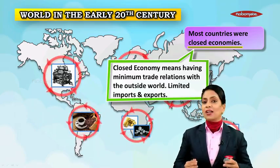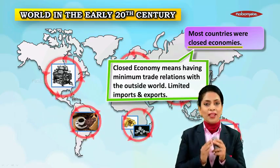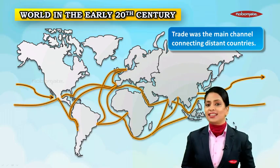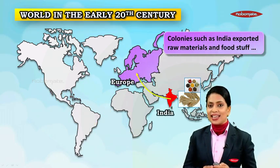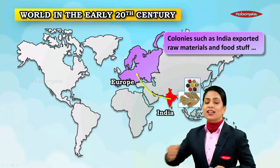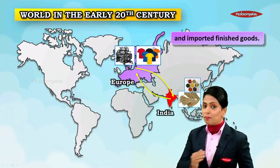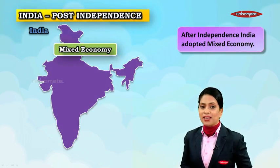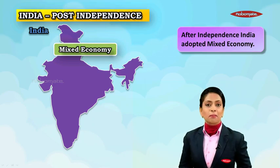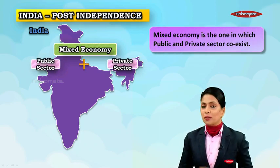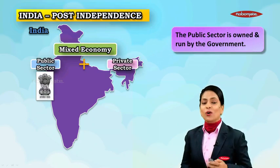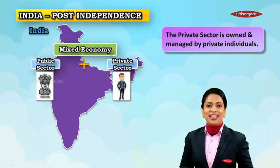These economies had limited imports and limited exports — except for essential goods, they kept contact with the rest of the world to a bare minimum. Trade was the main channel connecting distant countries. Colonies like India, which were under British rule, exported raw materials and foodstuffs and imported finished goods. Then came India's independence and the post-independence stage. After independence, India adopted the mixed economy.